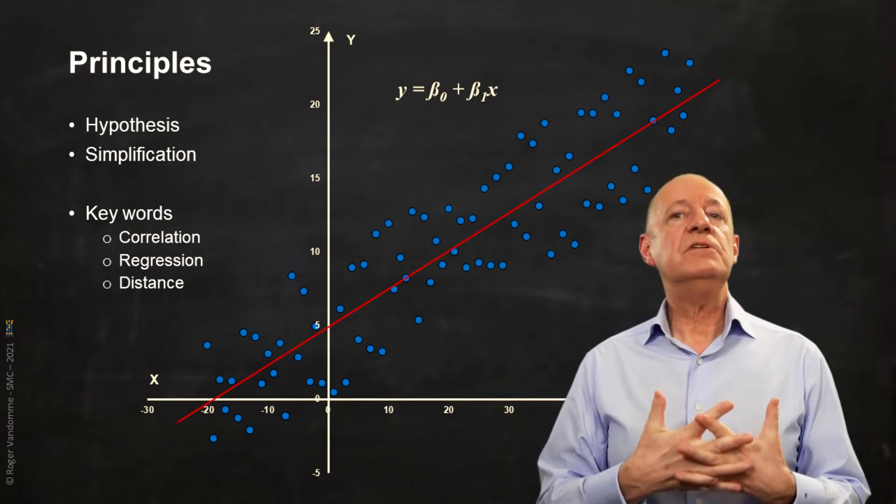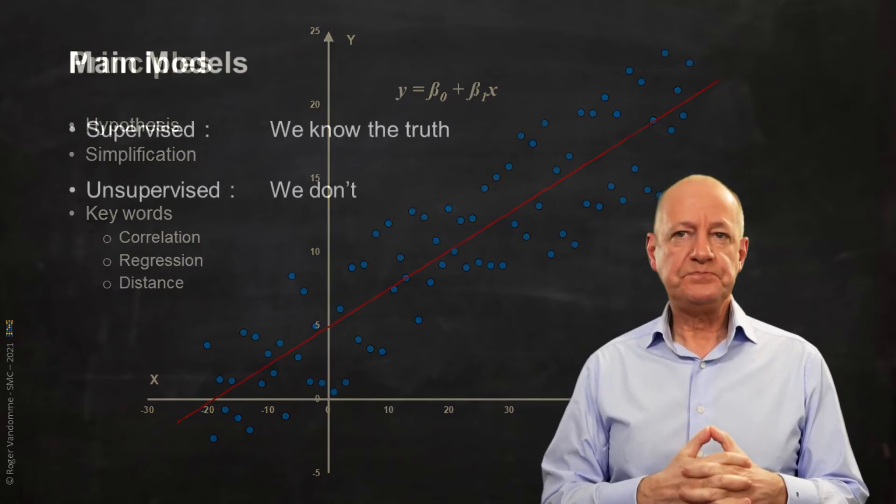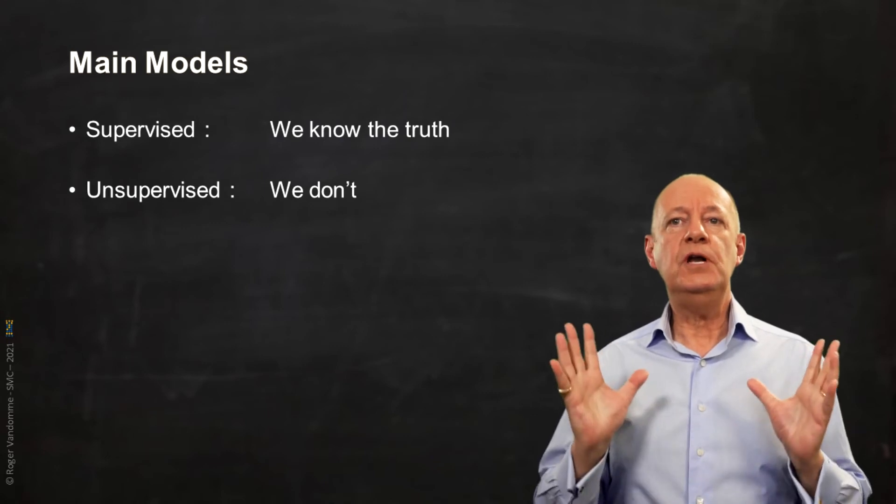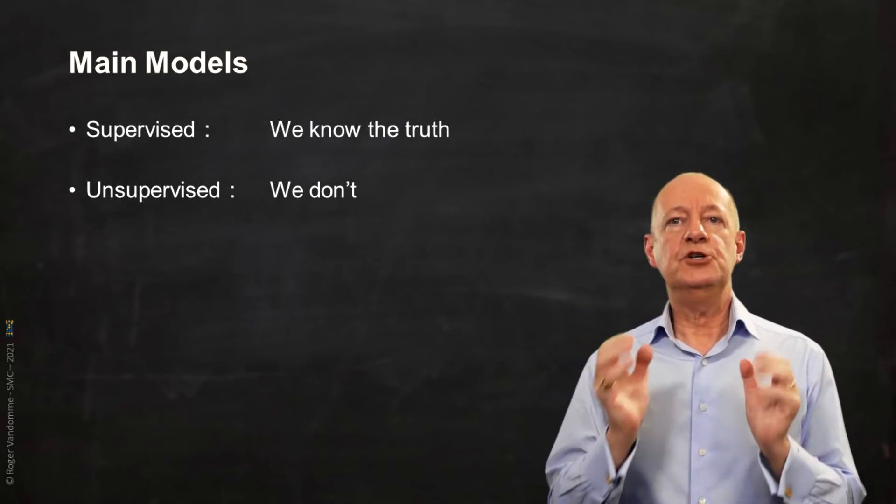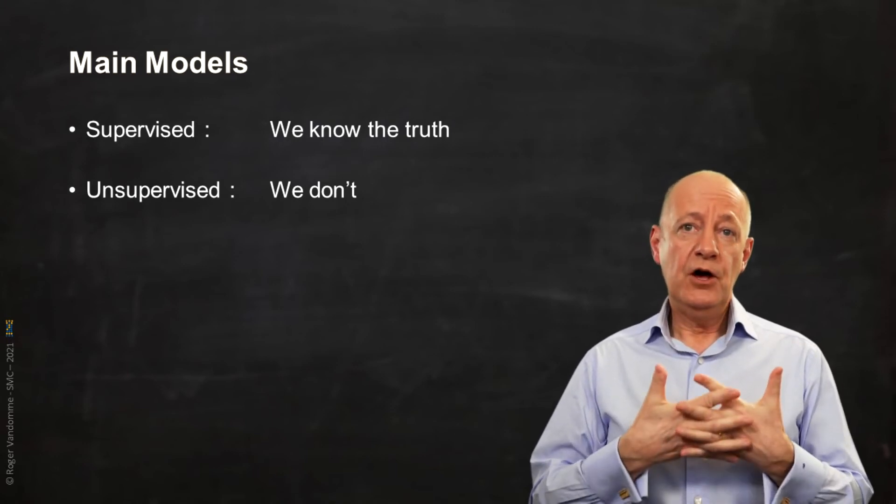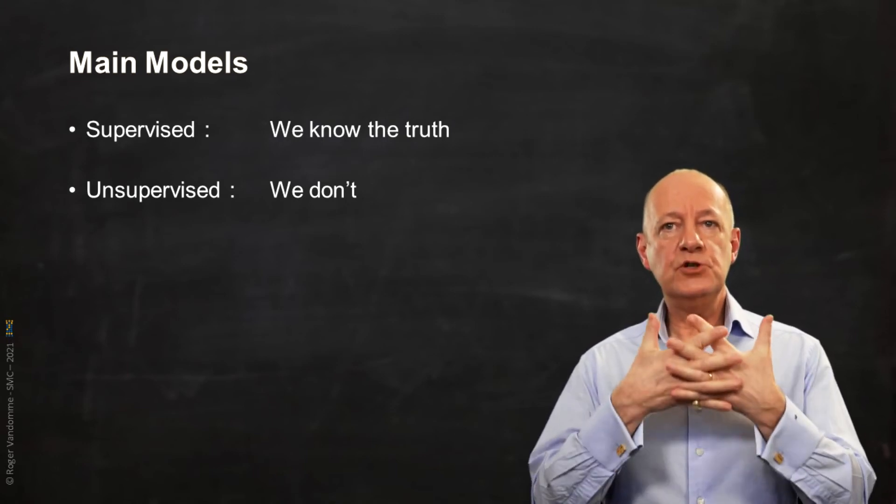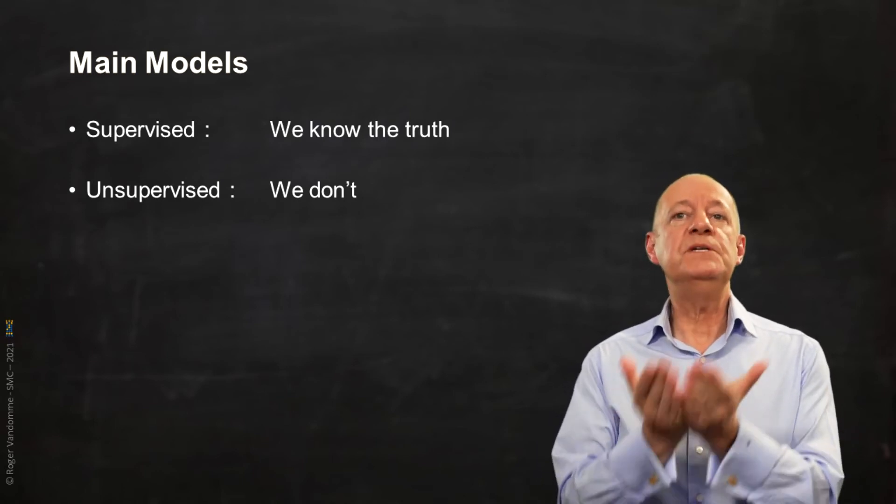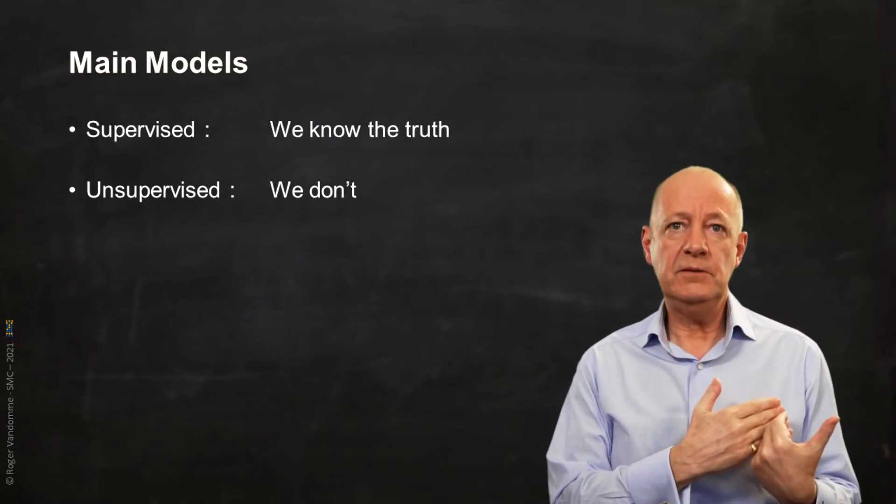There are several kinds of predictive models. First, let's look at the two largest model families, supervised and unsupervised models. A supervised model learns to recognize a truth that is given as a reference, a truth that has been observed and recorded in the past.